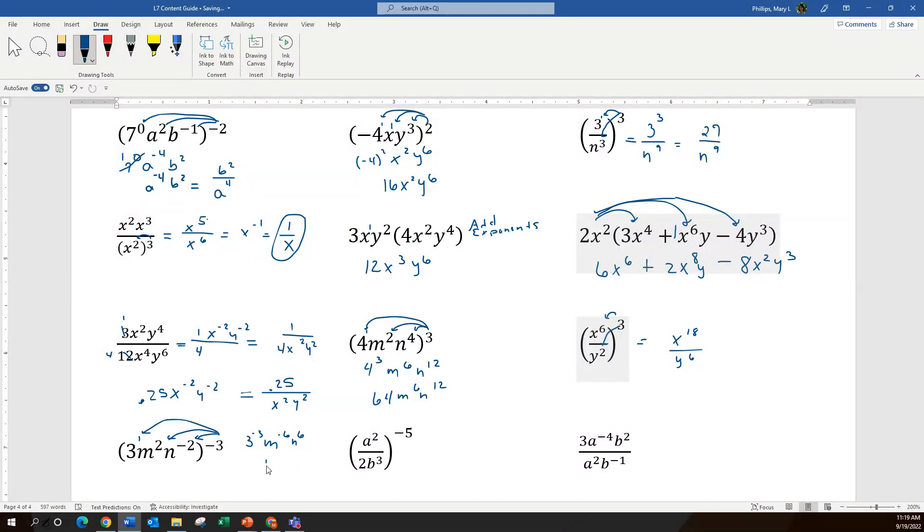And I put the n to the 6th on the top of my fraction because it's positive, so it's not going to move at all. I put 3 to the 3rd in the denominator and m to the 6th in the denominator. And then I can get the value of 3 to the 3rd, n to the 6th, divided by 27 m to the 6th.